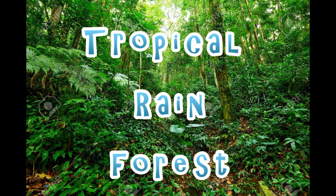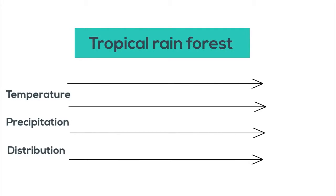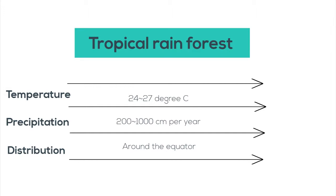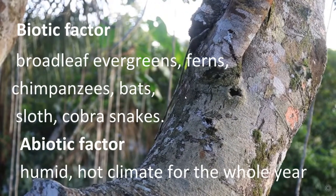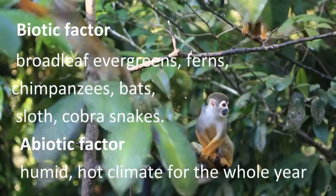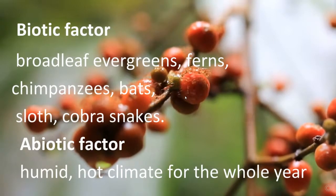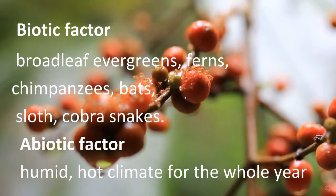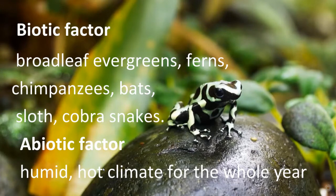Warm temperatures and large amounts of rainfall throughout the year characterize the tropical rainforest. Its temperature ranges from 24 to 27 degrees Celsius. Its biotic factor includes broadleaf evergreens, ferns, chimpanzees, bats, sloths, and cobra snakes. Its abiotic factor includes humid, hot climate for the whole year.